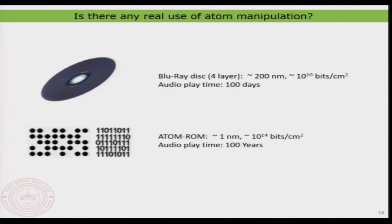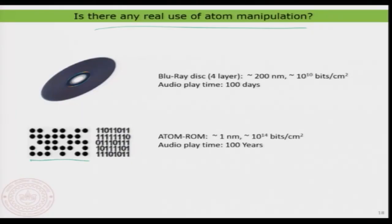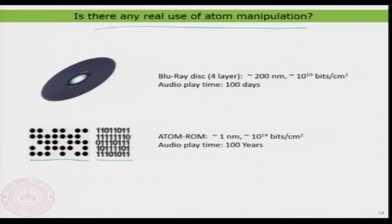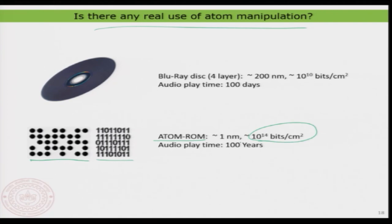Is there anything interesting about atom manipulation from a technological perspective? If you use an atom as an information bit — wherever you have manipulated an atom, call it 1, and the absence of an atom, call it 0 — you can create an array of atoms as an atom-based data storage. Since the bit size is basically less than 1 nanometer, the amount of information you can store in a small space is something like 10⁴ times bigger than a typical Blu-ray disc, meaning you could store audio for much longer. This is a futuristic perspective of creating and manipulating atoms on surfaces.